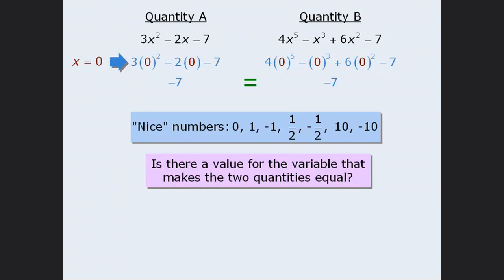At this point, it must be the case that either the two quantities are always equal for every value of x, or the two quantities are not always equal. So if we choose some other number at random and plug it in, and the two quantities are still equal, then there's a good chance that the two quantities will be equal for all values of x, which means the answer will be C. Conversely, if we plug in another number and the two quantities are not equal, then the answer must be D.